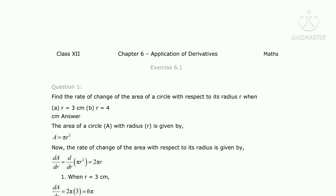We define area by A, so A equals pi r squared. The rate of change of area with respect to its radius means we find dA/dr. dA/dr equals d/dr of pi r squared. Since pi is a constant, we take it outside: pi times d/dr of r squared. Applying the power rule, d/dr of r squared equals 2r, so dA/dr equals 2πr.